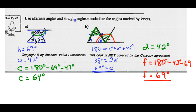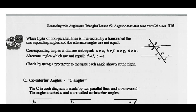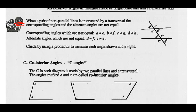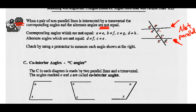Note: when a pair of non-parallel lines is intersected by a transversal, the corresponding angles and alternate angles are not equal. These two lines are not parallel — they do not have the arrow indicating that they're parallel. So the rules we just discovered are not true. Corresponding angles are not equal: A does not equal E, B does not equal F, C doesn't equal G, and D doesn't equal H. Similarly, alternate interior angles are not equal: C and E are not equal, and D and F are also not equal.